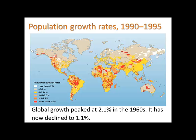We should know that global growth peaked at 2.1% in the 1960s — that's when the population was growing the fastest. It has now declined to 1.1%.